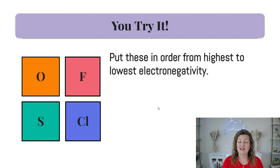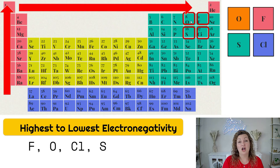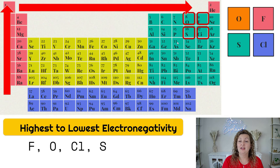Let's try another one. Put these in order from highest to lowest electronegativity — go ahead and pause your video. Let's check it out. You can see these are all non-metals this time. We're going to go with fluorine as our highest electronegativity, then oxygen, chlorine, and then sulfur as our very lowest. Remember, you can draw that same arrow in the upper right-hand diagonal, and that may help you too.